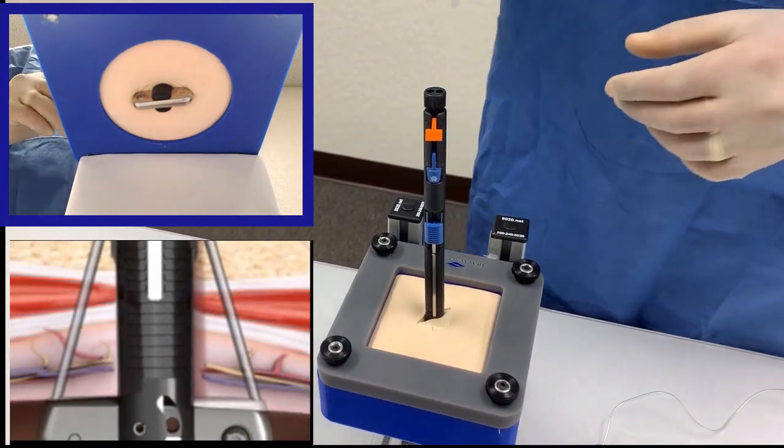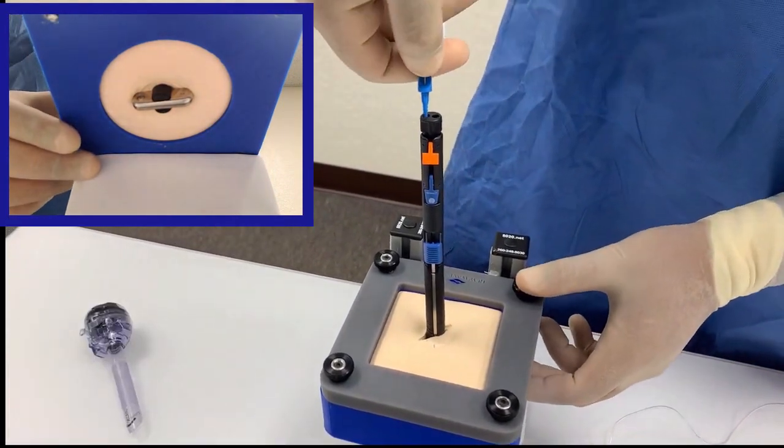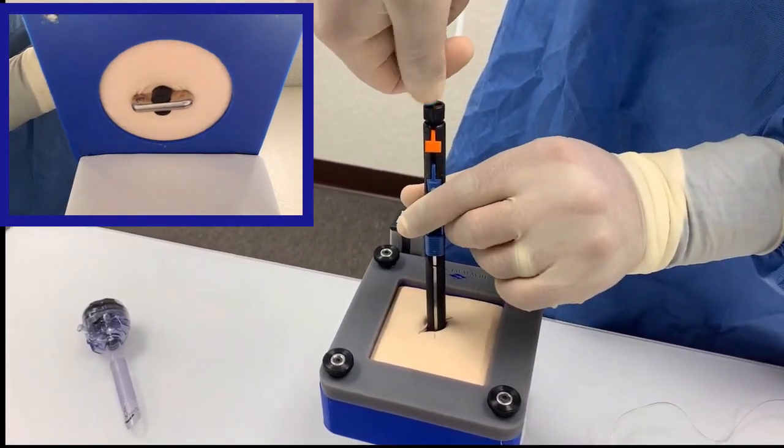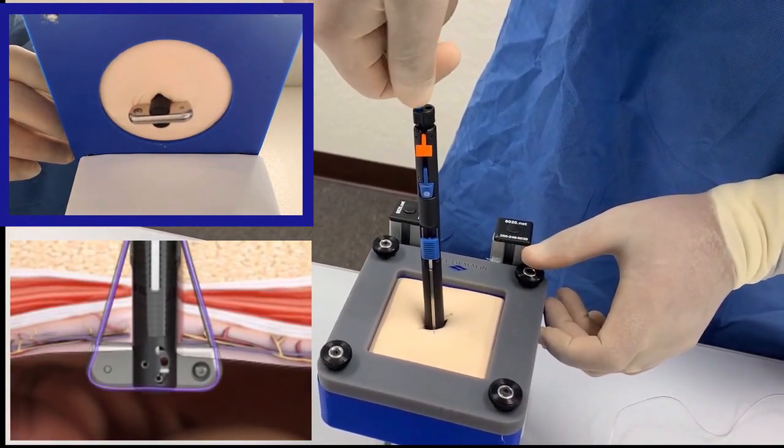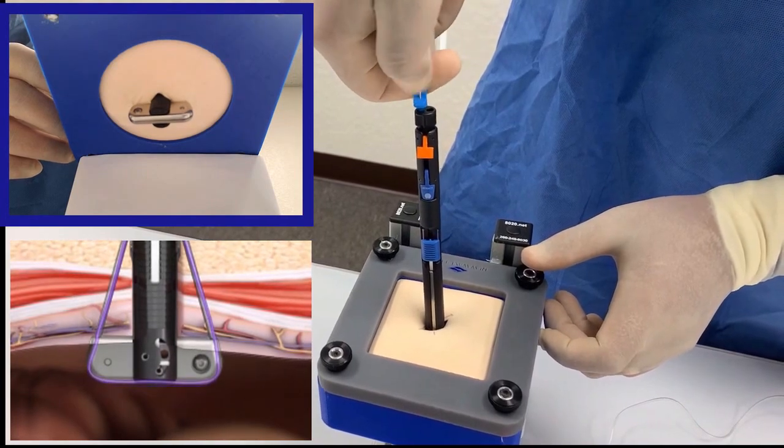Fully insert the tip of the blue guide wire advancer into either hole on top of the plunger. Using your thumb, advance the guide wire all the way until it comes out the other hole.